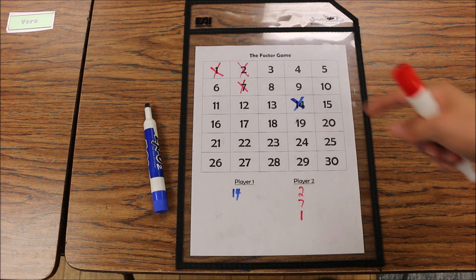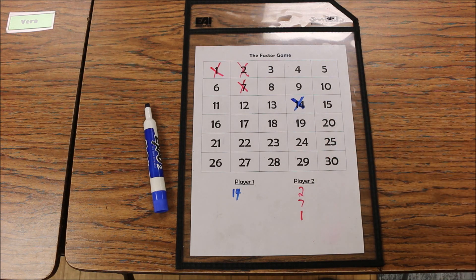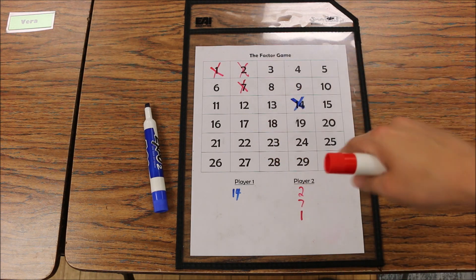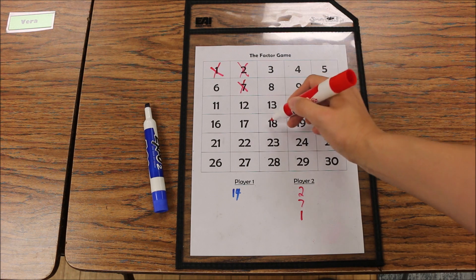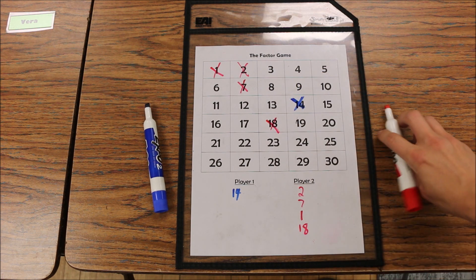There are no other factors left to mark at 14, so now player 2 picks their own number to start. If they pick 18, they give themselves 18 points.